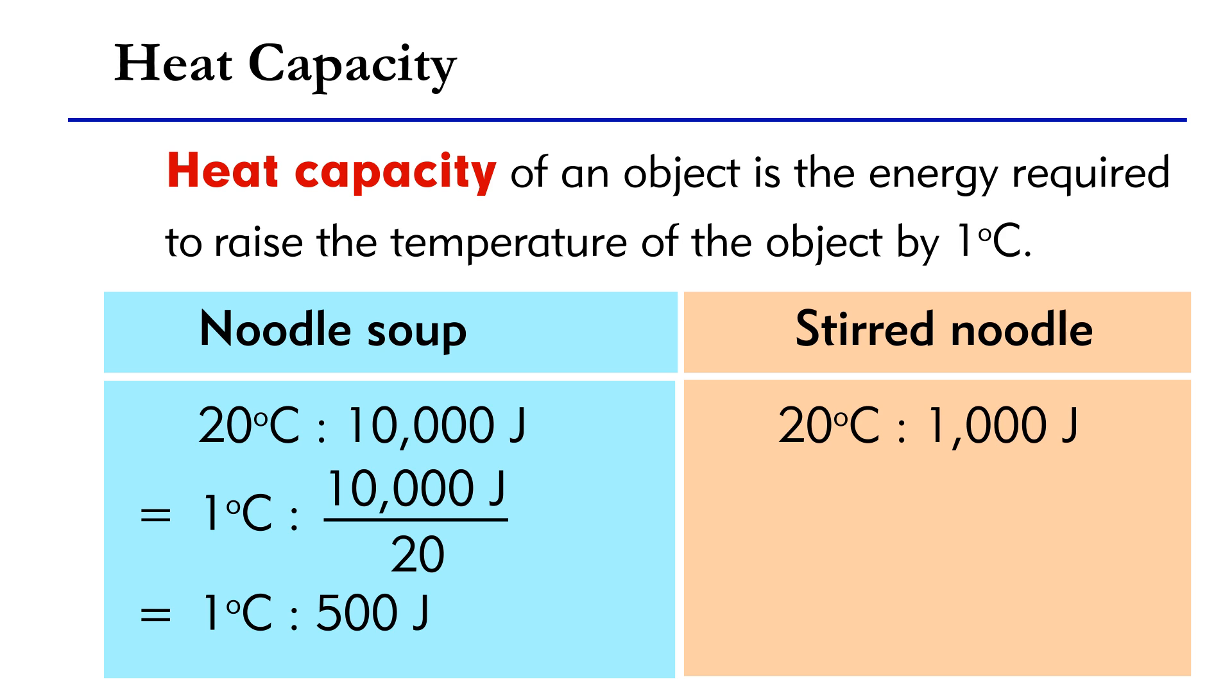Similarly, the heat capacity for the stirred noodle is calculated by dividing 1,000 Joules by 20 degree Celsius and the result is 50 Joules per degree Celsius. The heat capacity of the stirred noodle is only one-tenth that of the noodle soup.